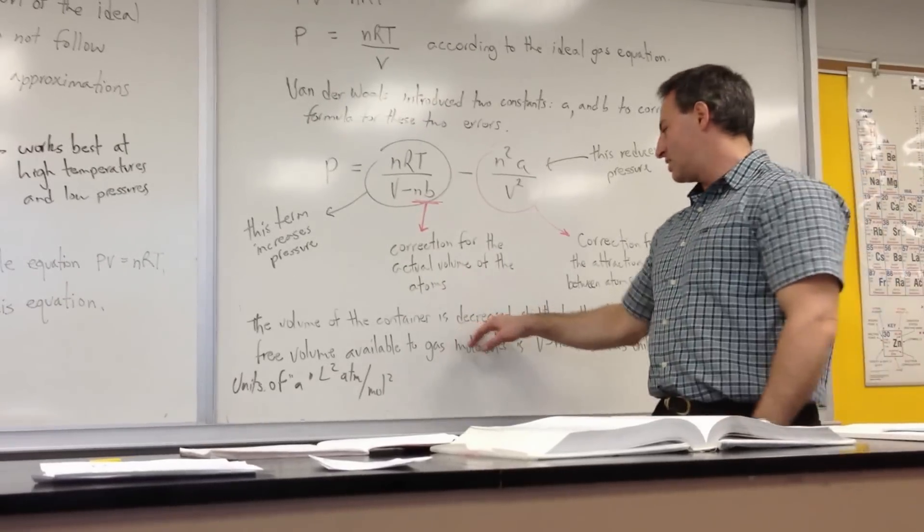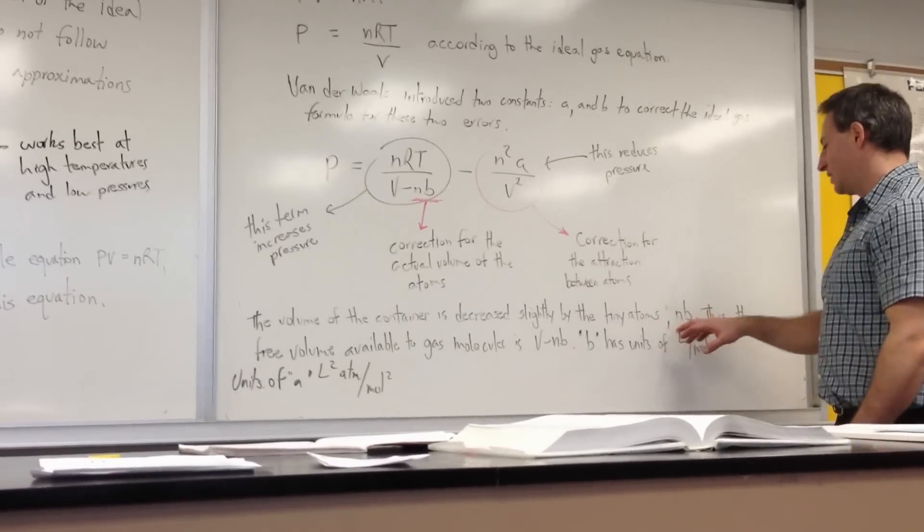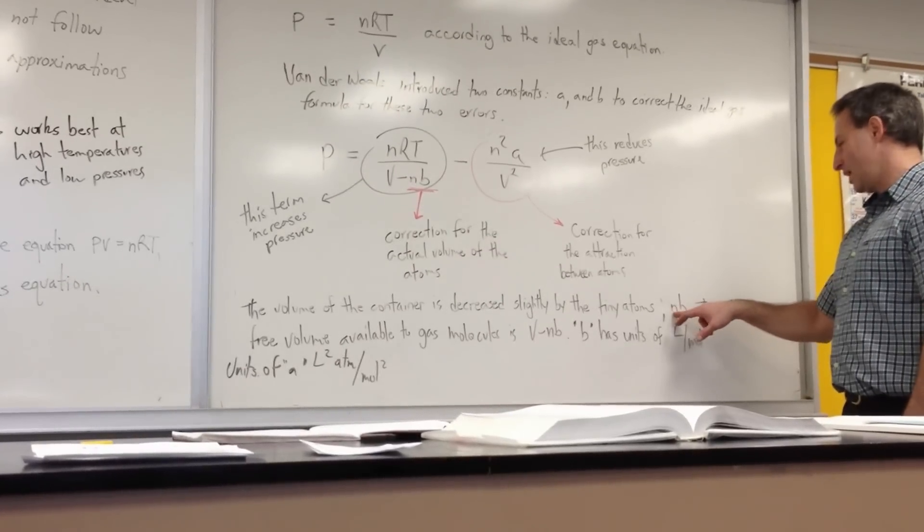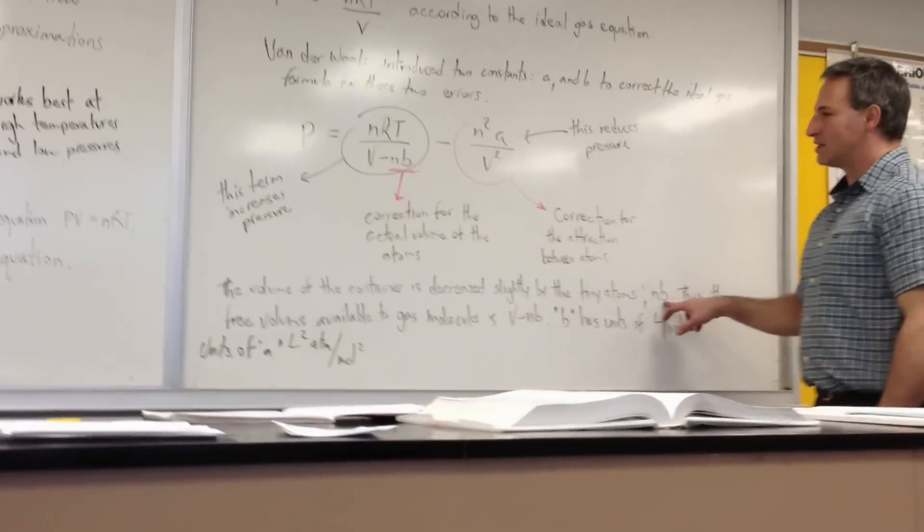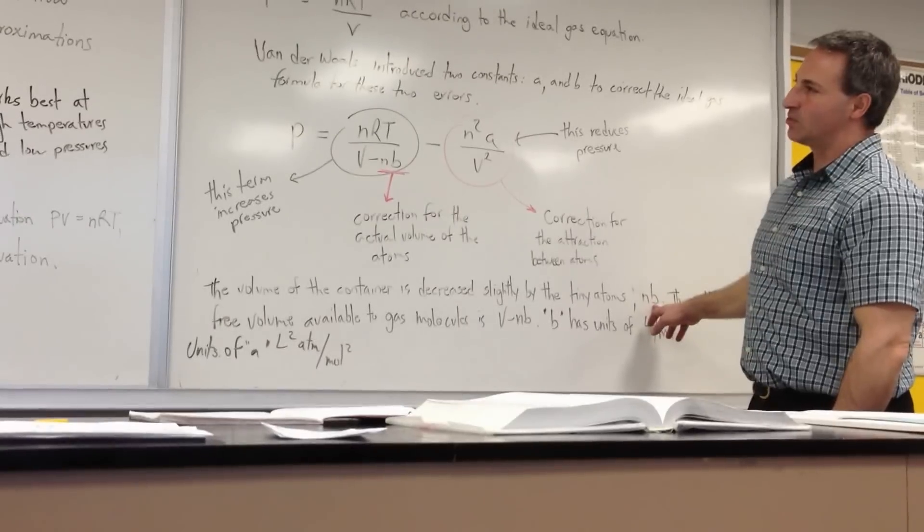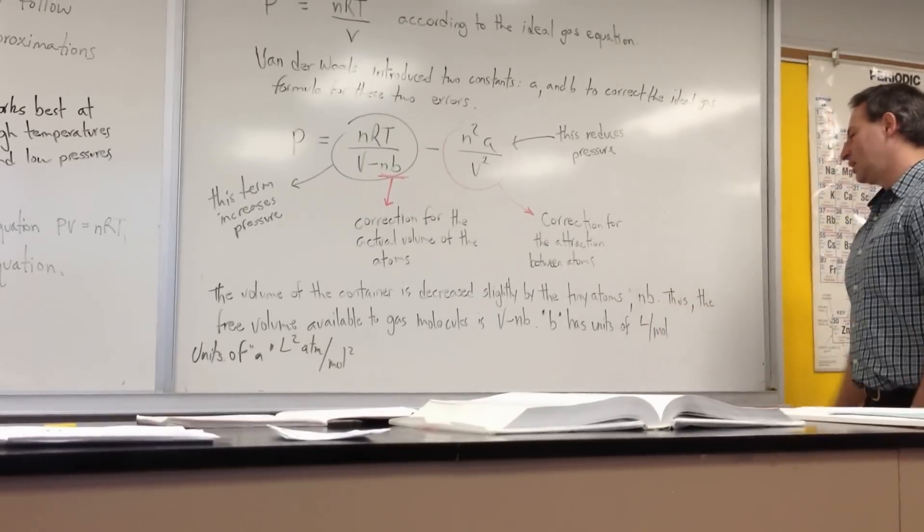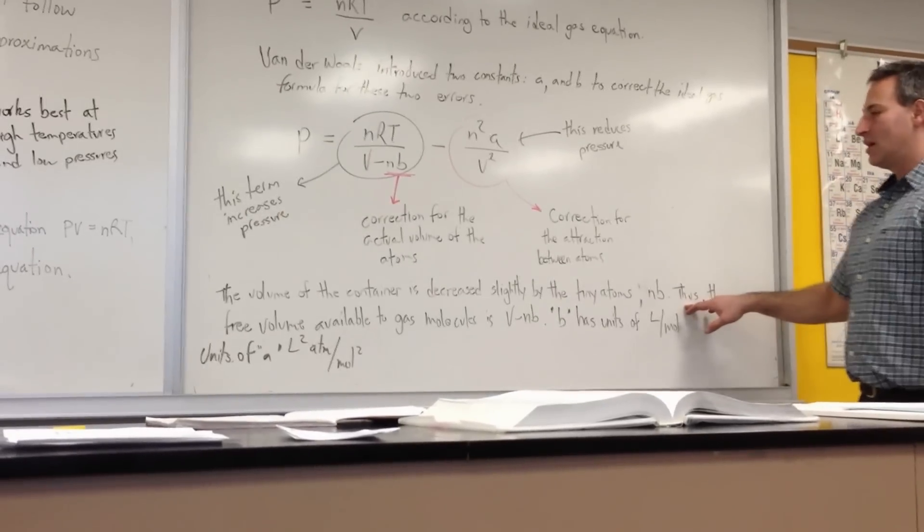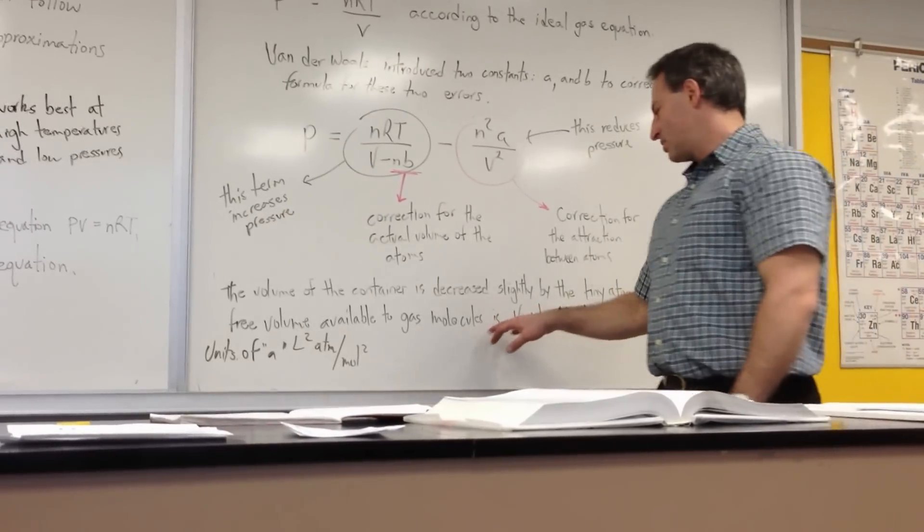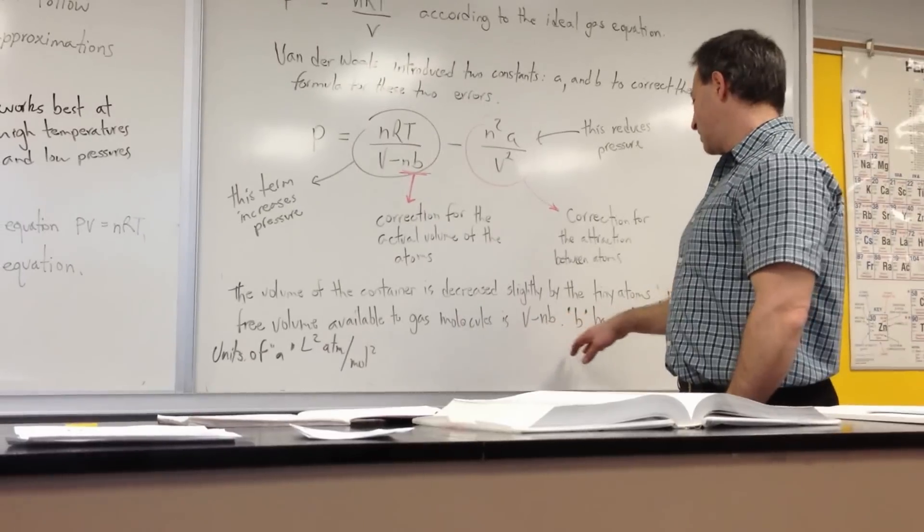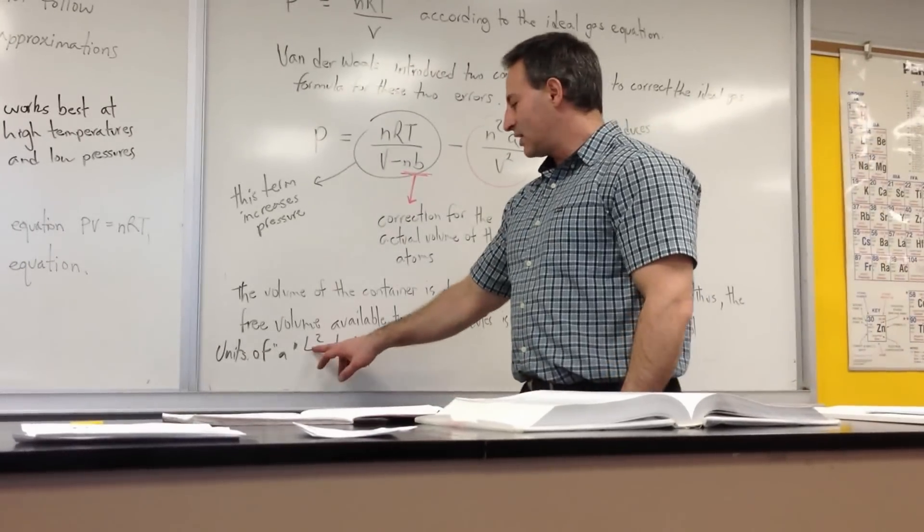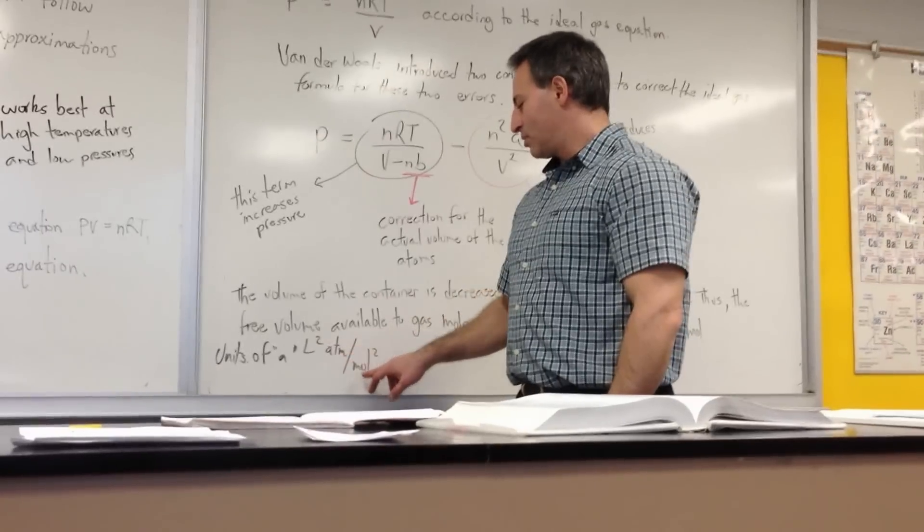So the volume of the container is decreased slightly by the tiny atoms, and that's represented by the term NB, where N is the number of moles, and B is the constant that is worked out using empirical calculations based on experimental evidence. Thus, the free volume of the gas molecules is V minus NB. B has units of liters per mole. And the units of A are liters squared atmosphere per mole squared.